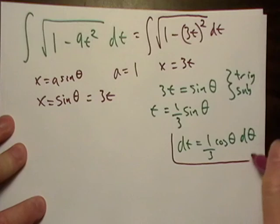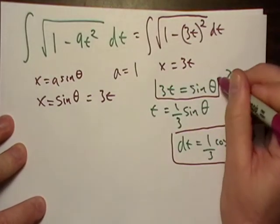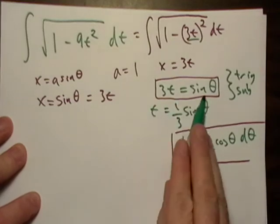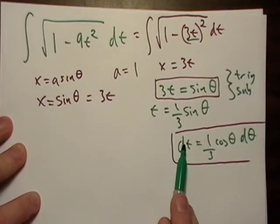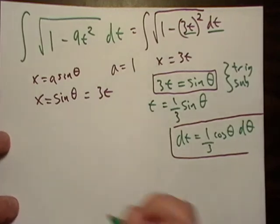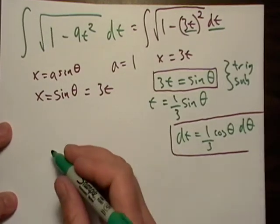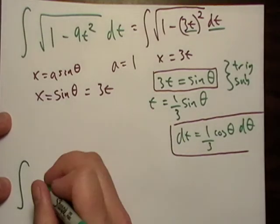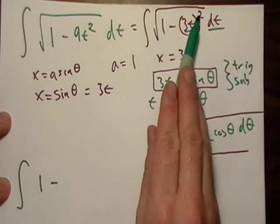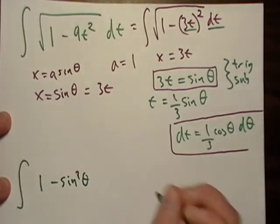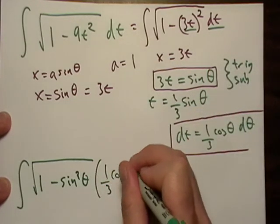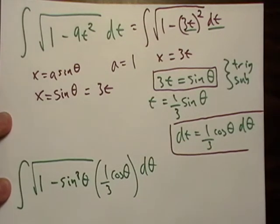Now, this is our piece of information that we really want. We want this, and we want this. And we're going to plug those into this. We're going to plug sine in for 3t right here, and then we're going to take dt and plug it in for dt. So let's just go ahead and do that right now. This is going to be integral of square root of 1 minus sine squared theta, and dt is equal to 1 third cosine theta d theta. So we made our substitution.